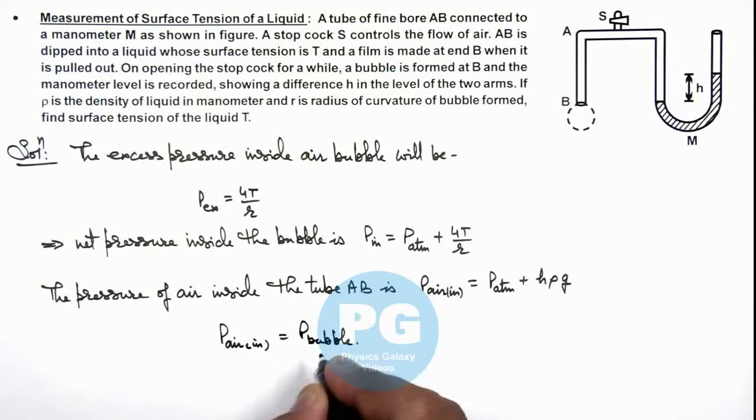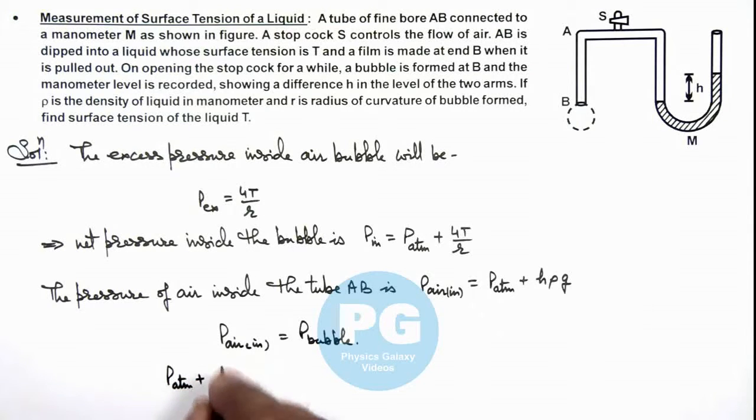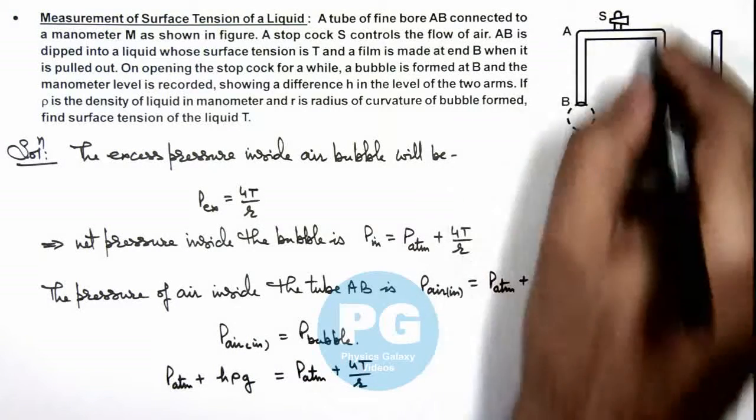Here we can simply write P atmospheric plus hρg should be equal to P atmospheric plus 4T by r. As the air is all connected inside, here P atmospheric gets cancelled out.